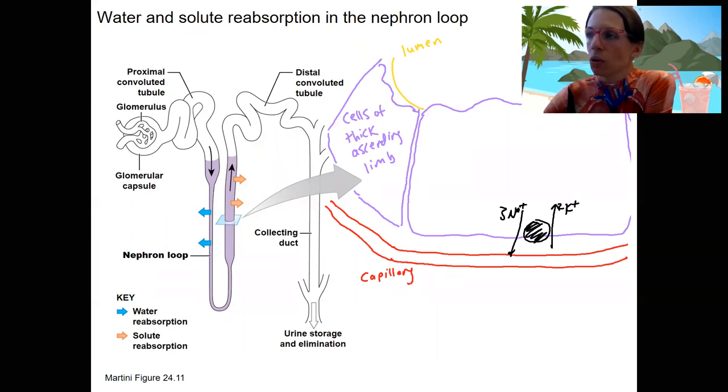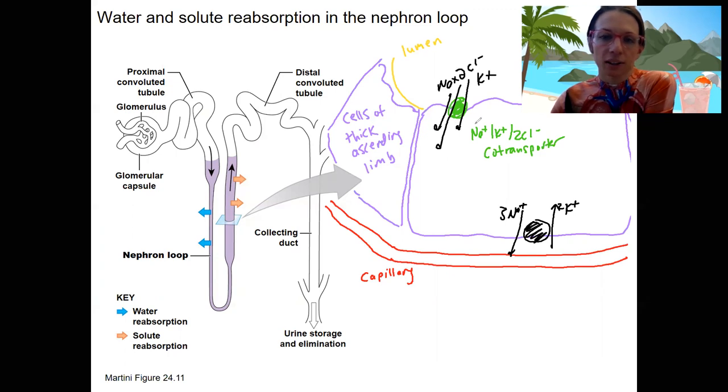We've got some other proteins too. One is the sodium potassium chloride, two chloride co-transporter. It's going to do exactly what it sounds like, which is move sodium in, potassium in, and two chlorides in. This is a co-transport pump. Once these are in here, we can have diffusion across the cytoplasmic space. Then we've got another protein that allows potassium and chloride out, another co-transporter.